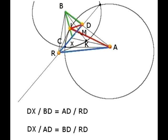Now we can do a little hocus pocus with this proportion. We can rewrite it in this equivalent form: DX/AD = BD/RD.